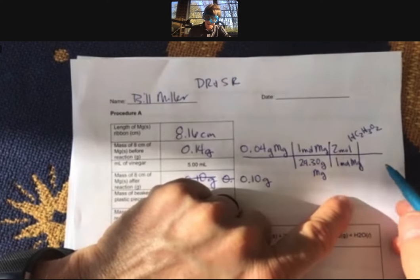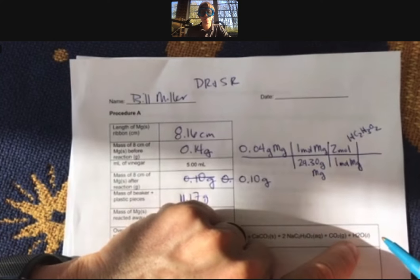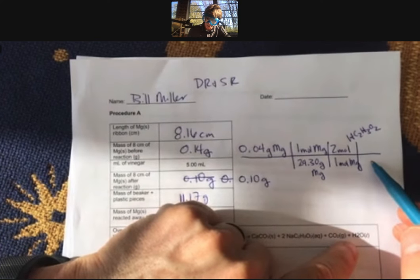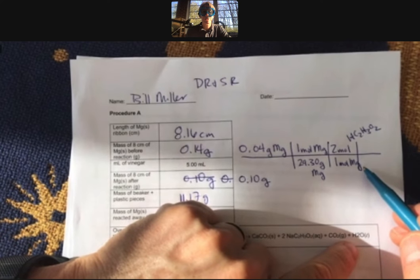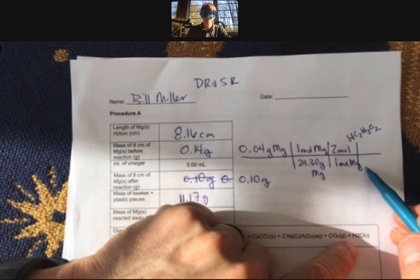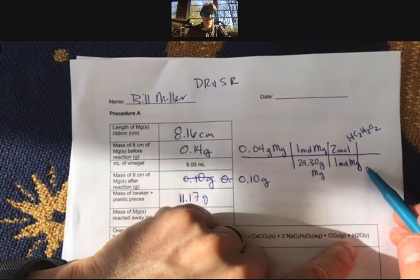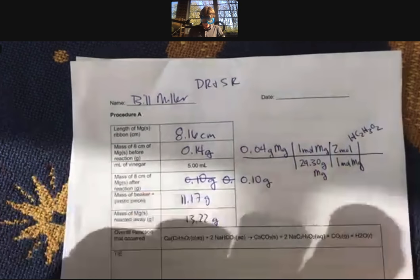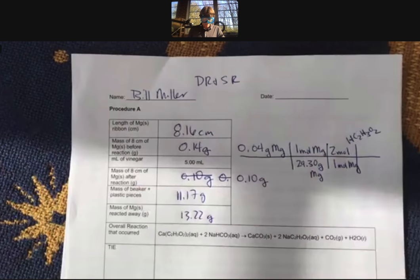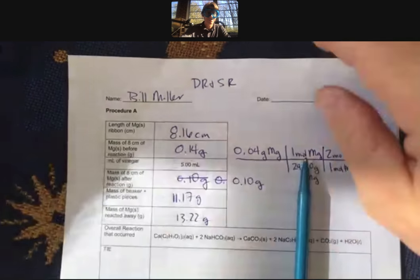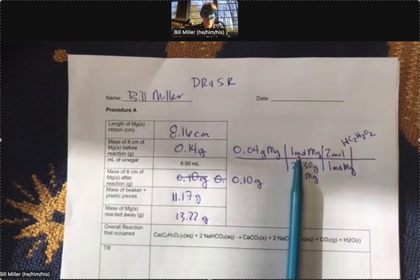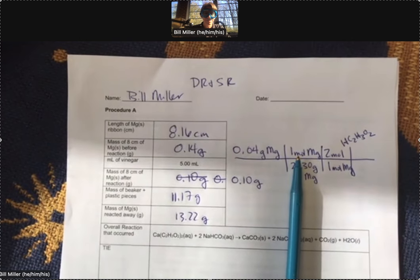The last step, which I'll allow you to do, is to use the molar mass of acetic acid and then do the calculation to get the grams of acetic acid. And that's the only calculation we have here.